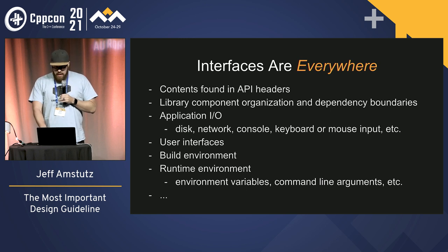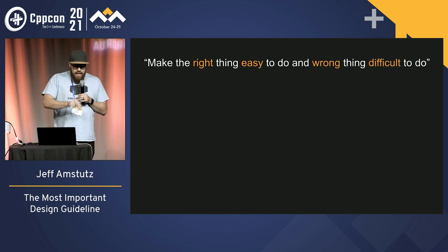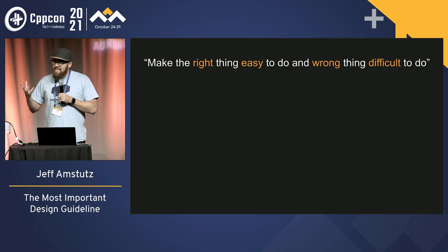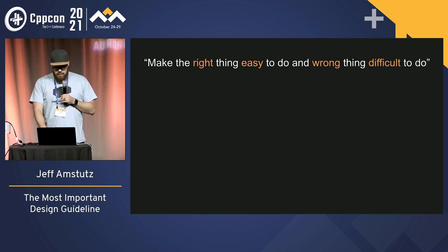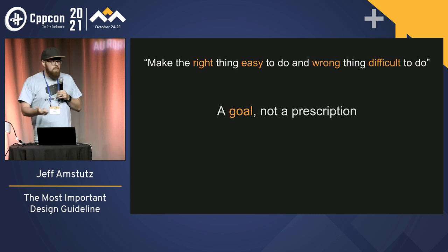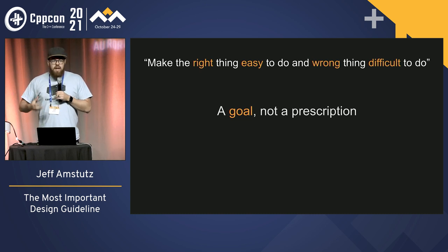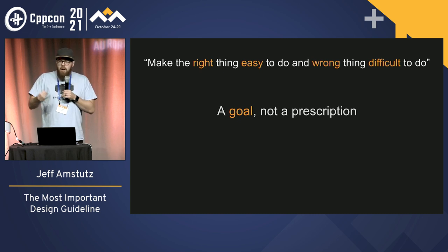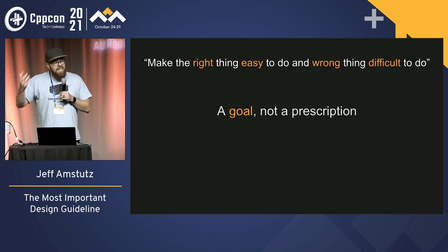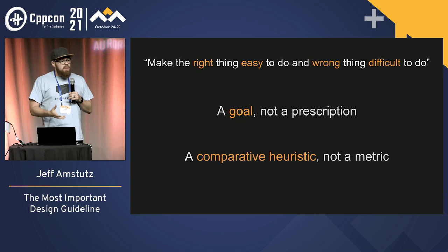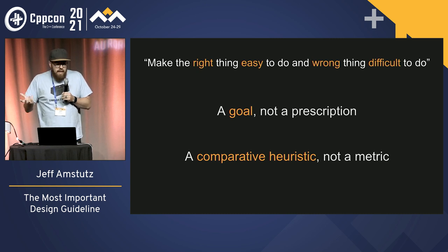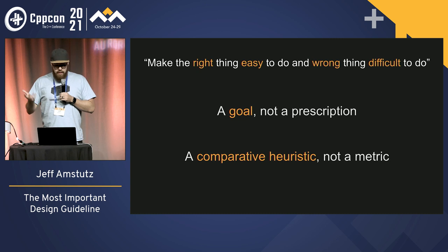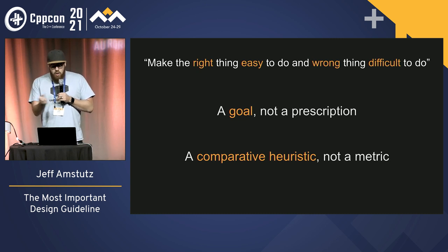The one thing that Scott Myers talked about in that talk is that the best design guideline is to make the right thing easy to do and the wrong thing difficult to do. This sounds obvious, but it's something that can be applied at the biggest decisions and the smallest decisions that you'll make in your development workflows. This is first a goal — it's not a prescription. Sean Parent in his Better Code series often talks about things that are goals, so they're not always attainable to the nth degree, but there's something to keep striving for. This is also a comparative heuristic, not a metric. This idea only applies when you have two different decisions to choose between — something on its own, you can't tell if it's doing the right thing easier or preventing you from doing the wrong thing. So this is always a comparative thing.